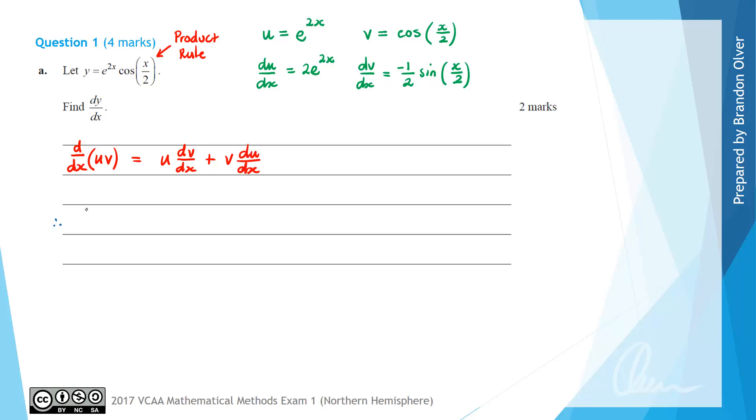Therefore, for this question, dy/dx—the derivative we're after—equals u, which is e^(2x), times dv/dx, which is -1/2 sin(x/2), plus v, which is cos(x/2), multiplied by du/dx, which is 2e^(2x). That is the answer to part A.